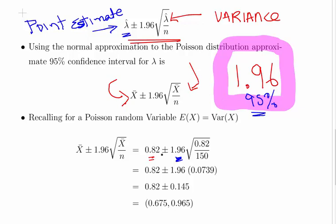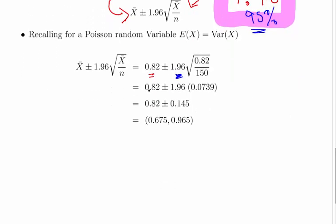So, 0.82 plus or minus 1.96 times the square root of 0.82 divided by 150. Essentially, what we have here is calculator work now. 0.82 plus or minus 1.96 times 0.0739, and essentially what we get there is 0.675 to 0.965.